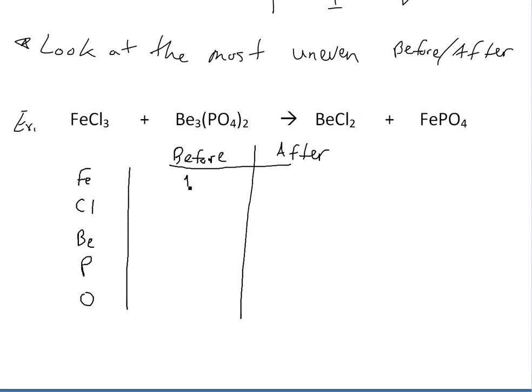And then we just again do the exact same as before. So Fe there's one. Cl there's three. Be there's three. P there's two. This one means two times everything inside. So there's two. O there's eight.